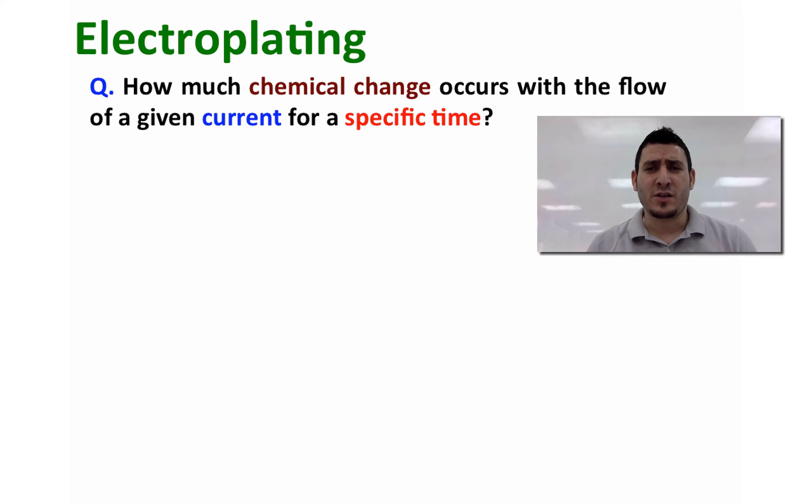Now we will consider the stoichiometry of electrolytic processes. The question is, how much chemical change occurs with the flow of a given current for a specific time?